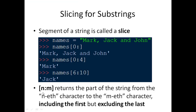So n:m returns a part of the string from the nth character to the mth character, including the first but excluding the last. You can apply various slicing examples — to get 'john' you count its starting and ending positions and specify those in the slice notation.